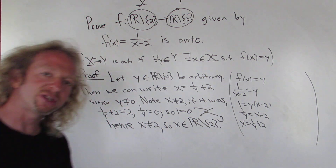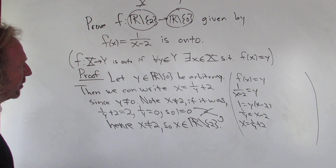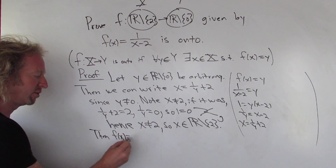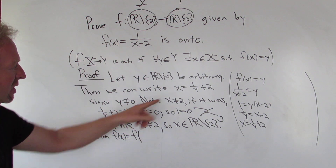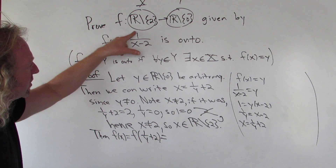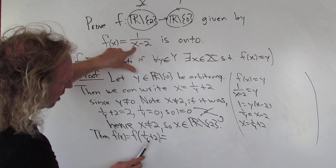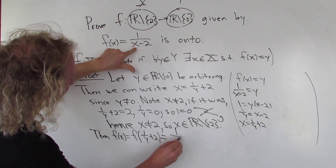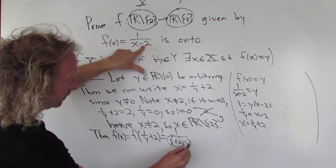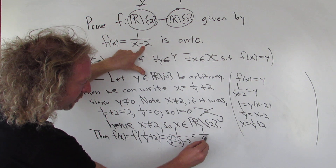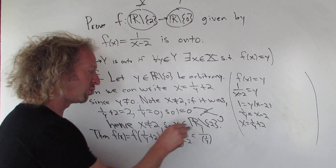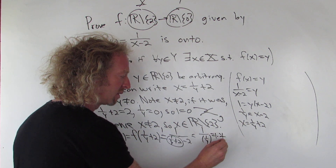Now we just have to show that f of x is equal to y — it really is a beautiful argument. We compute: f of x equals f of (1 over y plus 2), and since f of x is 1 over x minus 2, we substitute to get 1 over (1 over y plus 2) minus 2. The plus 2 and minus 2 cancel, leaving 1 over (1 over y), which equals y.